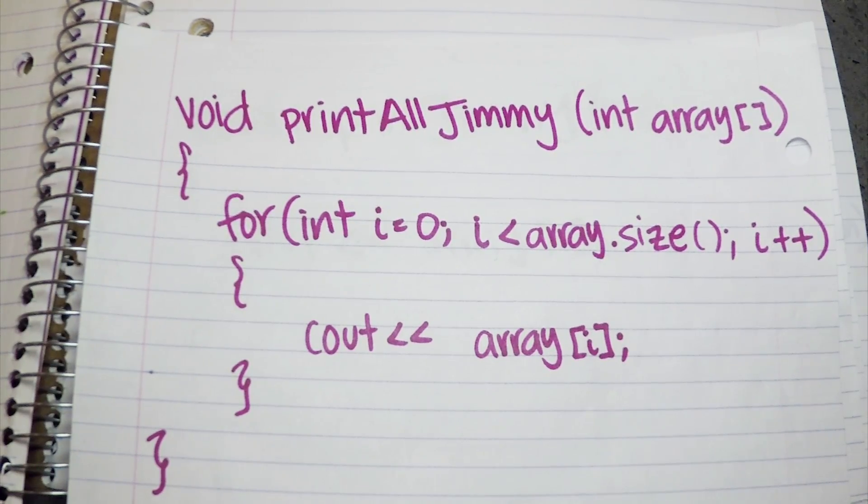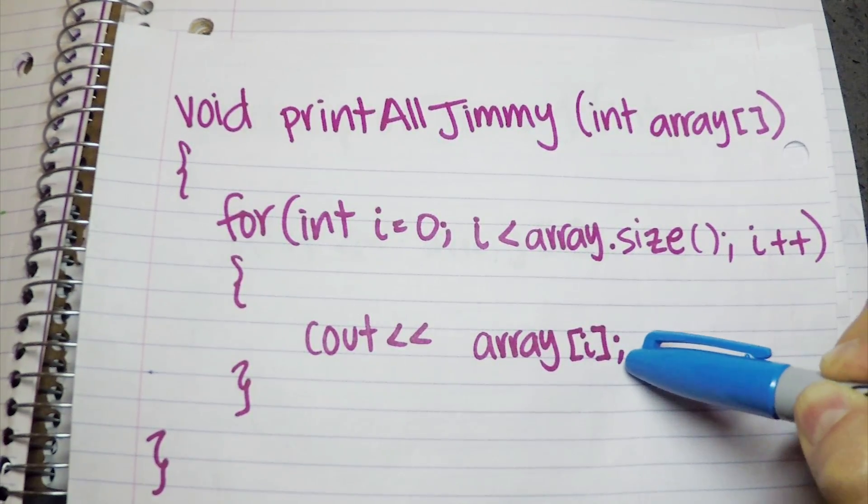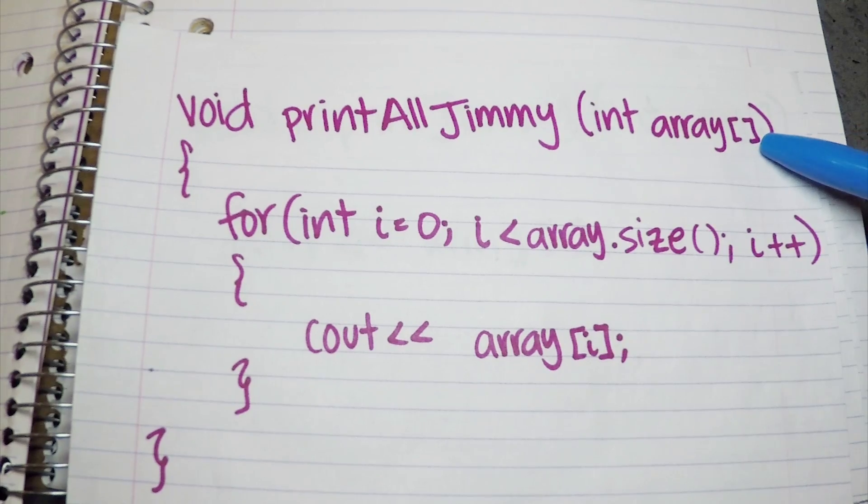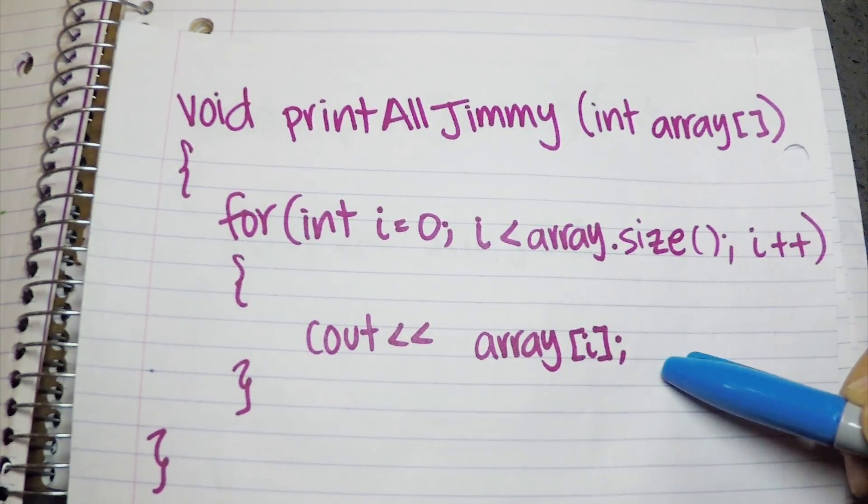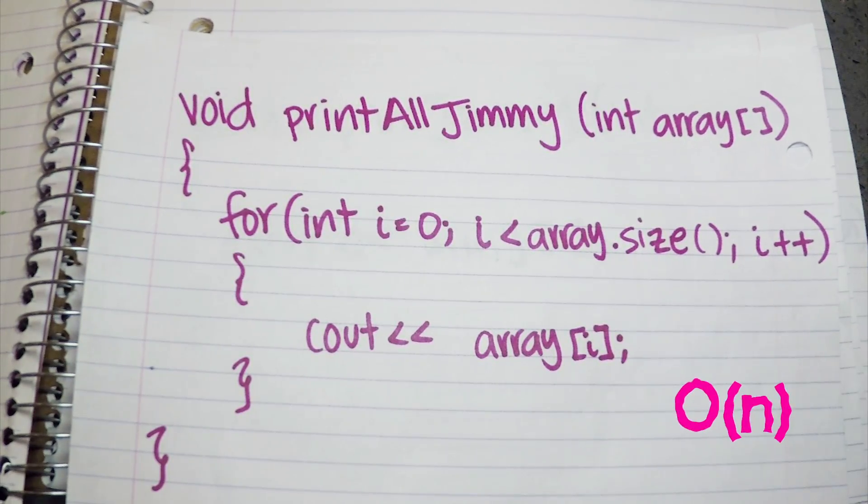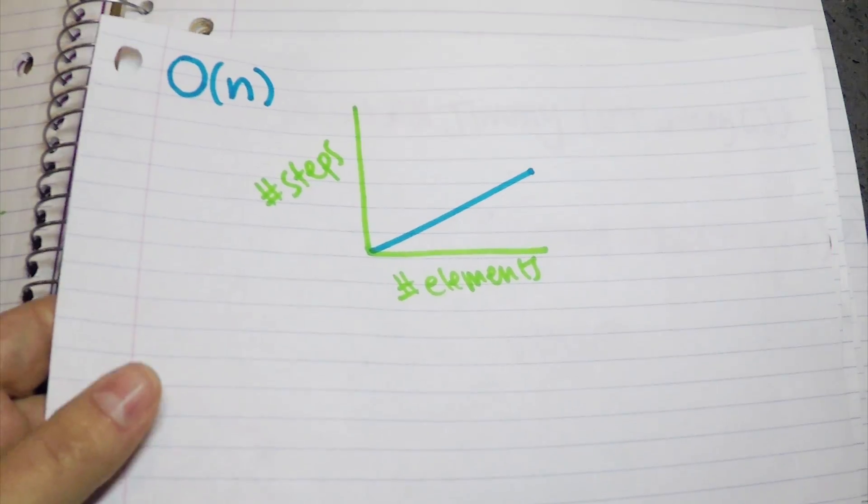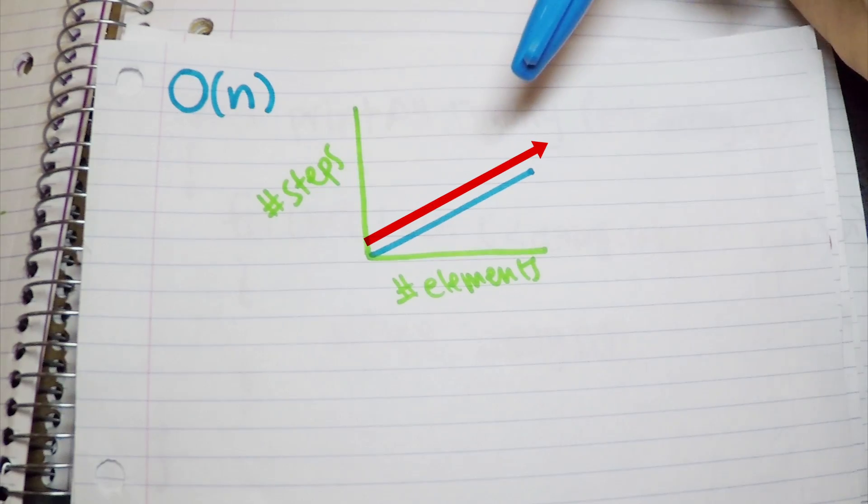In this function, I'm going to pass an array and I'm going to iterate n number of times, and as I iterate, print each element. If we have 1,000 elements, then we're going to iterate 1,000 times and print 1,000 elements. This will give us a complexity of O(n). If our number of elements increases, our number of steps will increase as well.